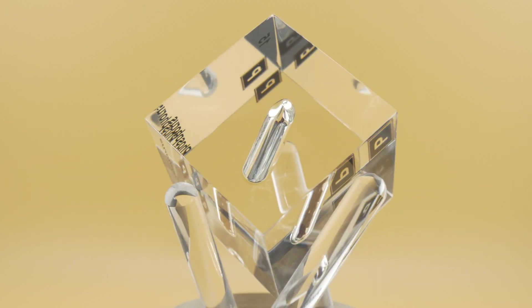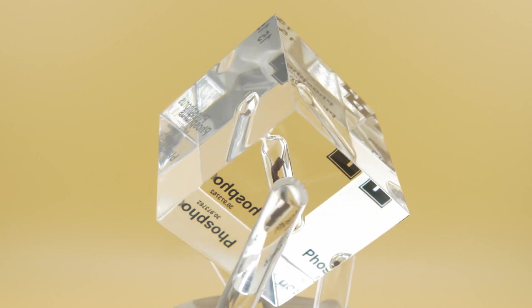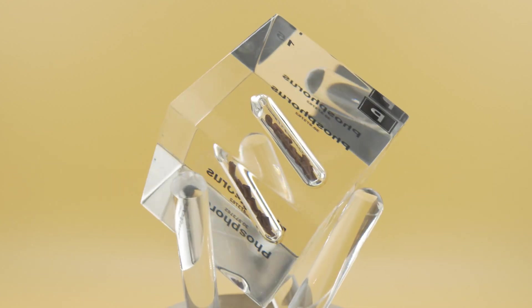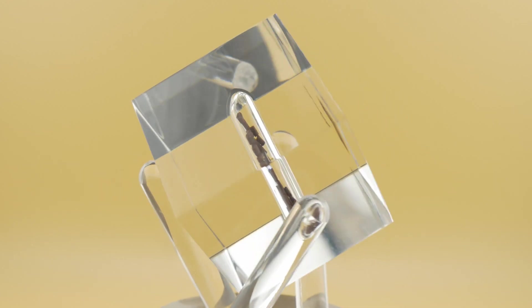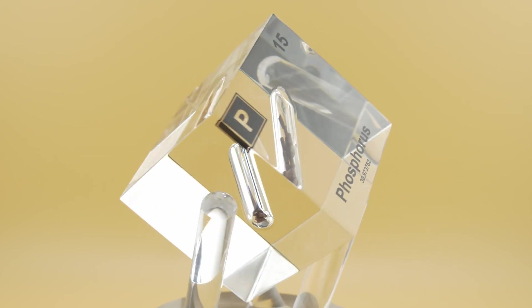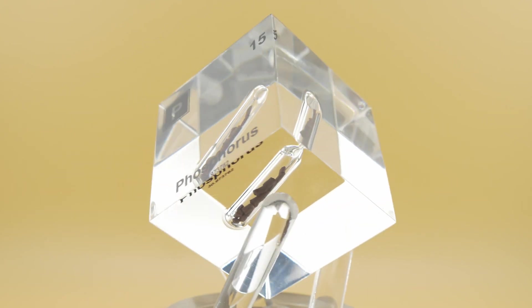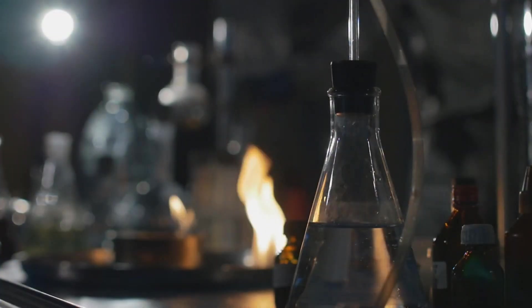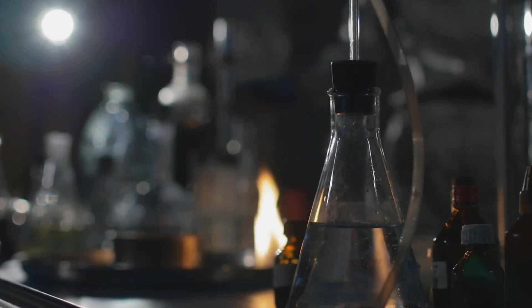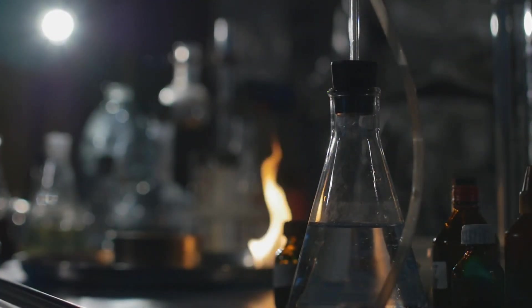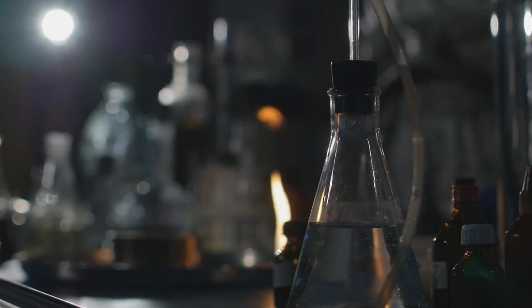Now then he went on with distillation. The concentrated syrup was heated further in a closed distillation apparatus and then the heating process aimed to separate and isolate the different components. Then he went on with reduction with carbon. Brandt mixed the concentrated urine residue with sand and carbon, likely in the form of charcoal. He heated the mixture intensely in the furnace.